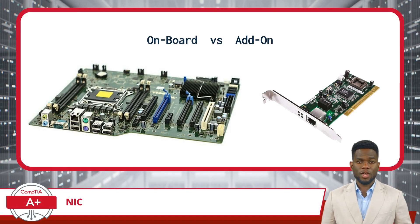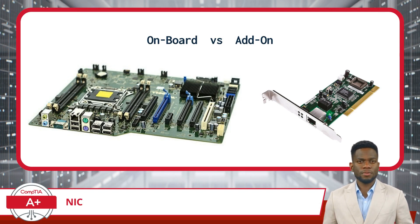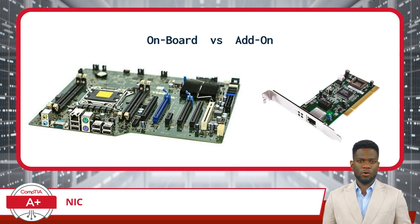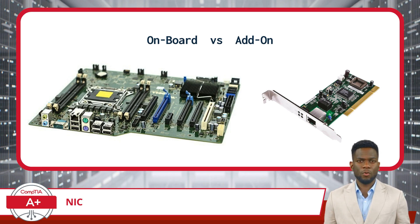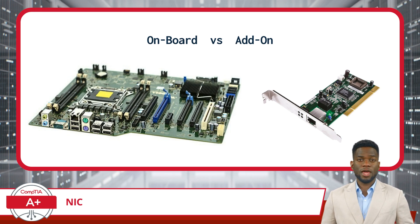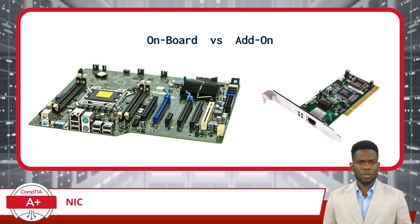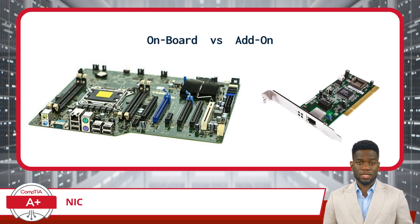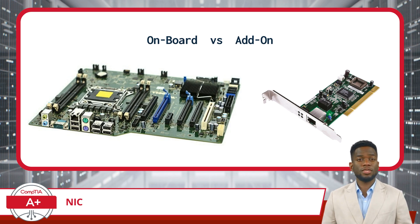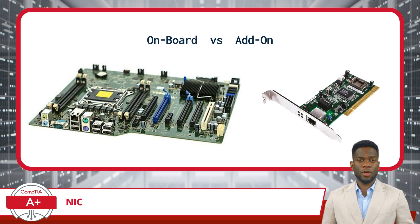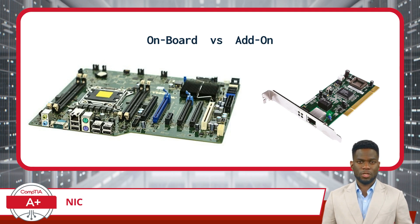You can also classify NICs into two more groups: they can be integrated into the motherboard of a computer — referred to as onboard NICs — or they can be added as a separate expansion card or add-on card. An integrated NIC is built directly into the motherboard and does not require any additional installation, but this poses restrictions as you lose the ability to upgrade in the future. Add-on NICs, however, can be easily replaced or upgraded — simply remove the existing add-on NIC and install a new one.